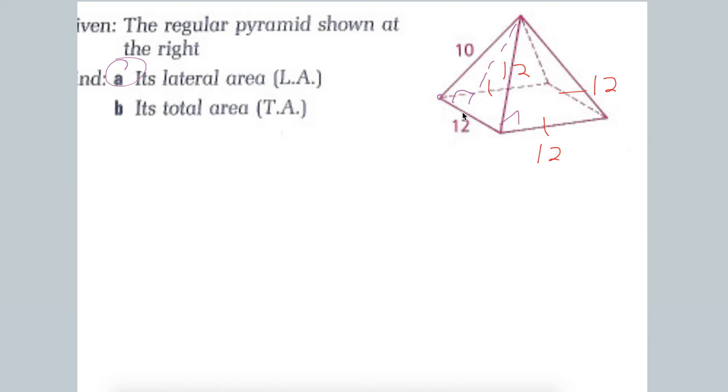then that means this little piece has to be half of that, half of that. So 6. So I'm going to draw one of the faces. So I drew perpendicular, that slant height. So this is 12, this is 6.